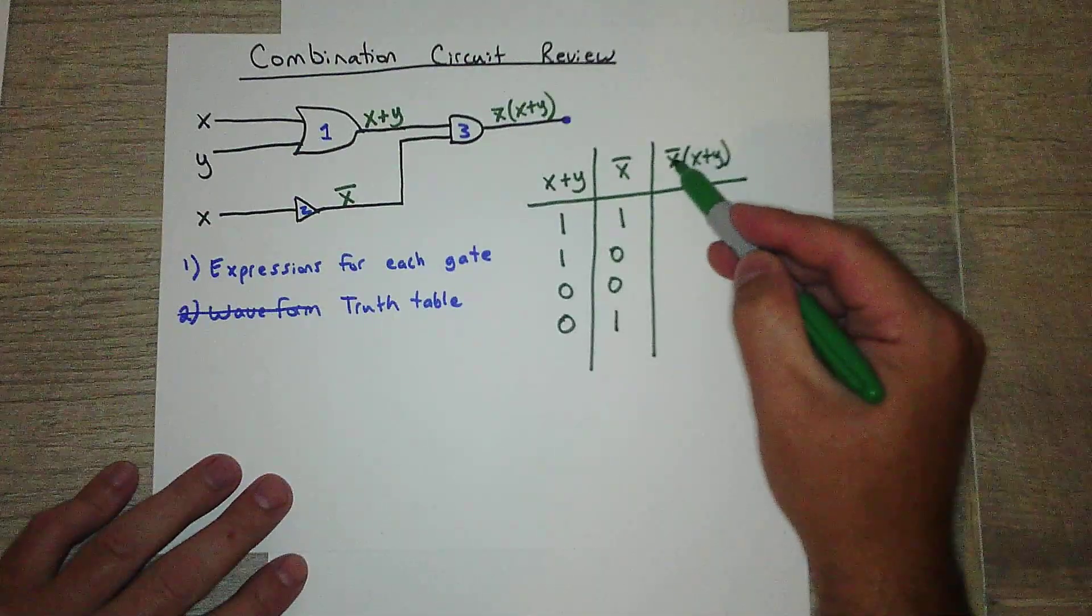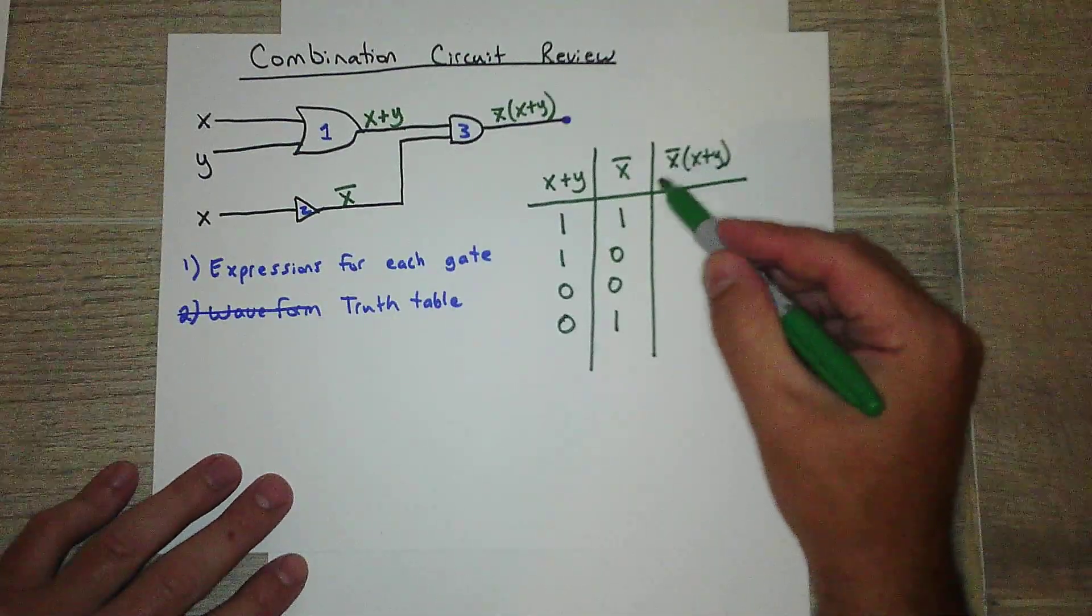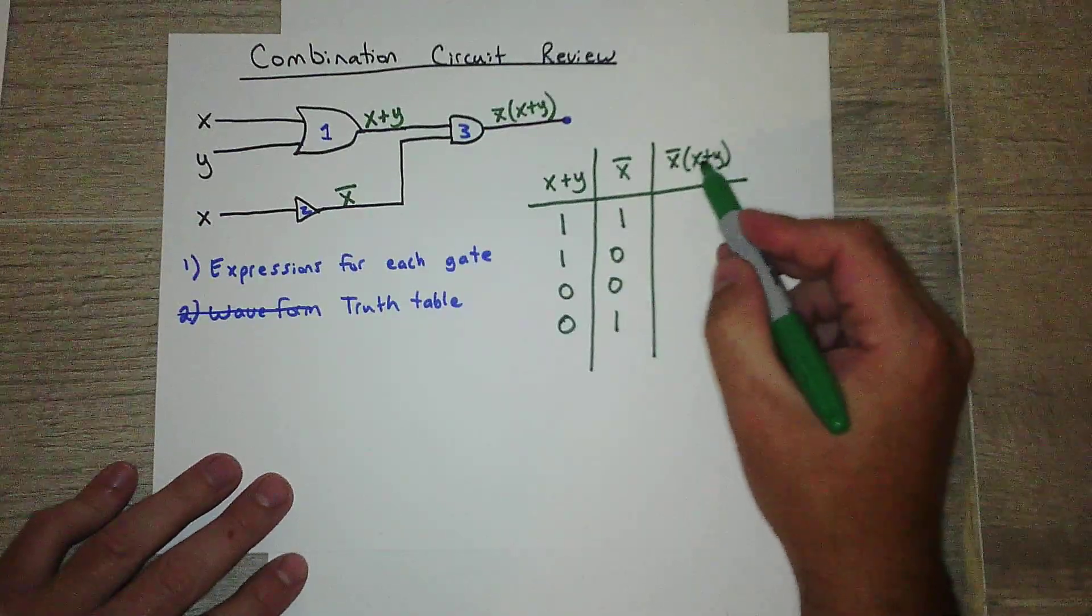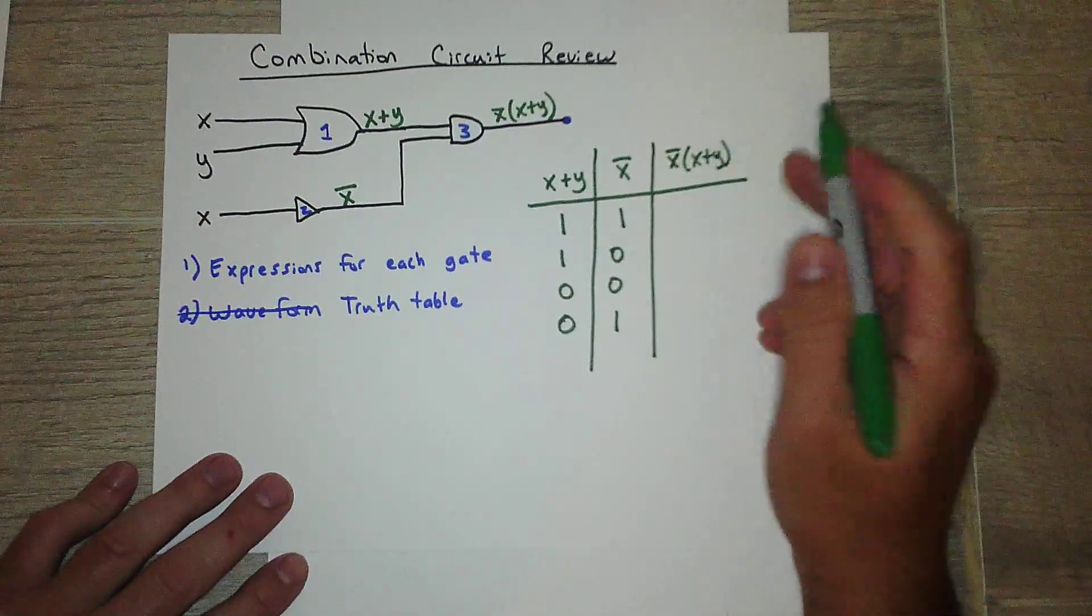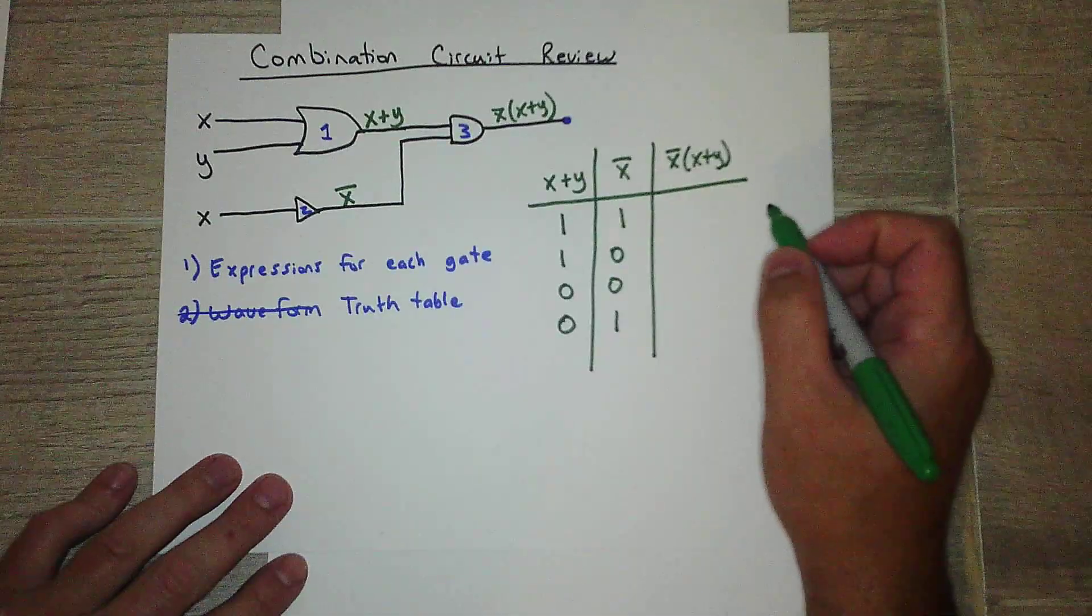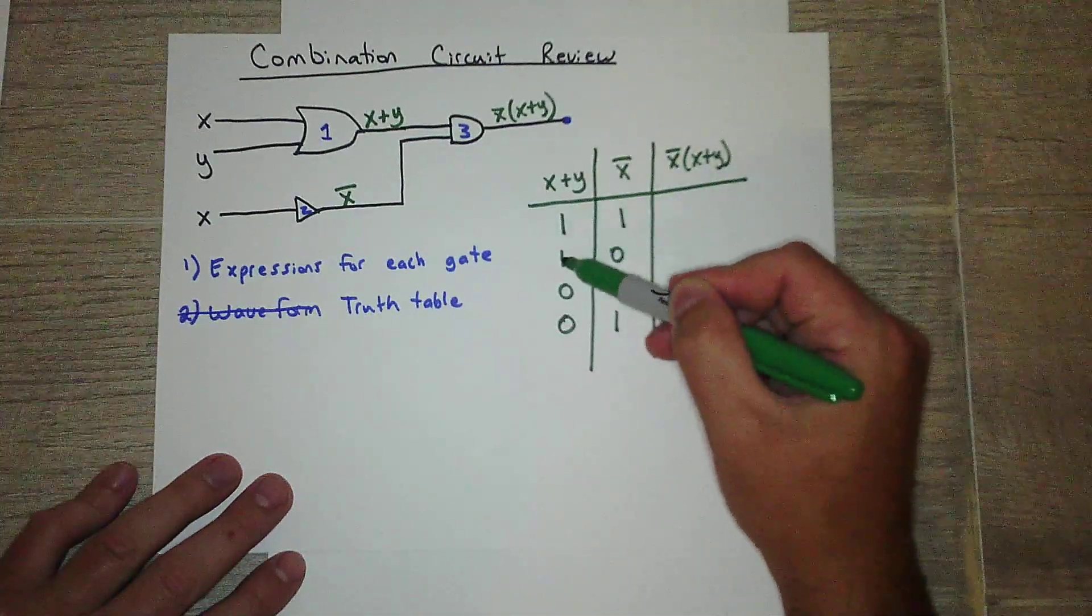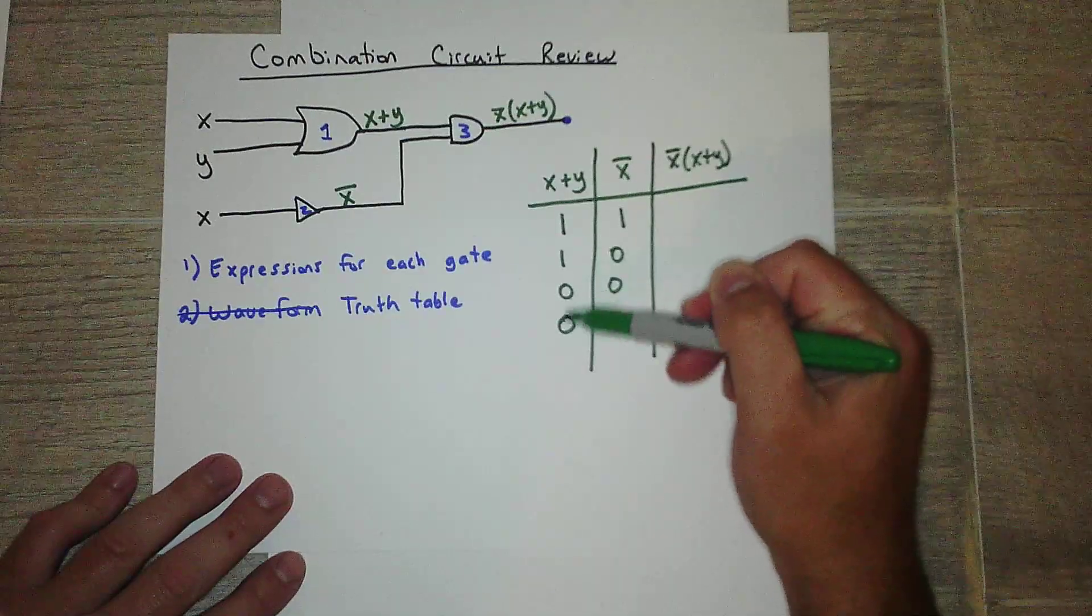This is when x is, when not x is on. So right here and right here. And when either x or y is on. Okay. So here, x or y is on. x or y is on. And then neither x or y is on.